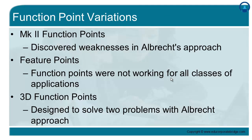Now let us look at the different variations of the function point technique. The first one is MK2 Function Points, which was developed after discovering weaknesses in Albrecht's original approach. Another variation is Feature Points, developed because function points were found not to work for all classes of applications. A third variation, called 3D Function Points, was designed to solve two specific problems present in Albrecht's original approach. These are the main variations to the function point technique.